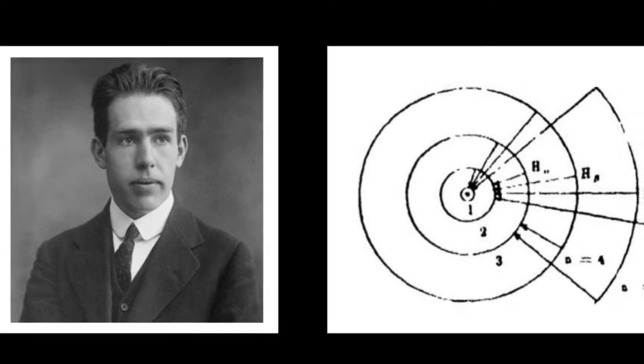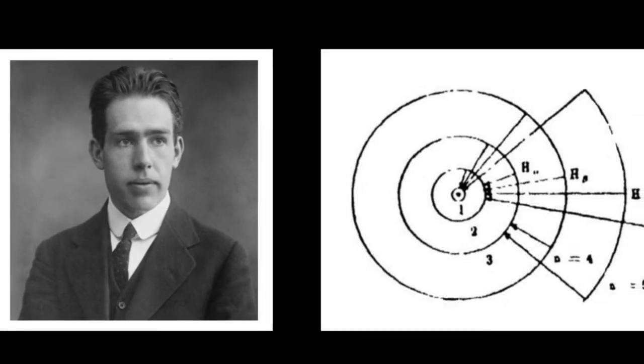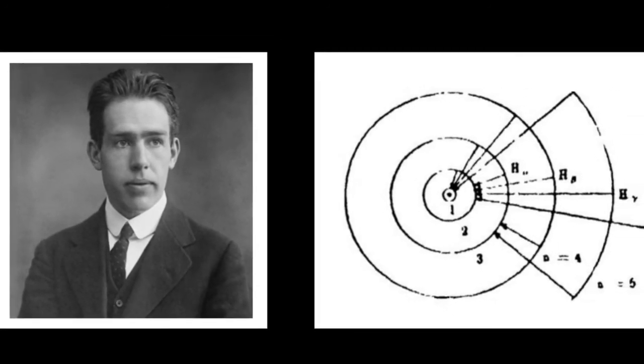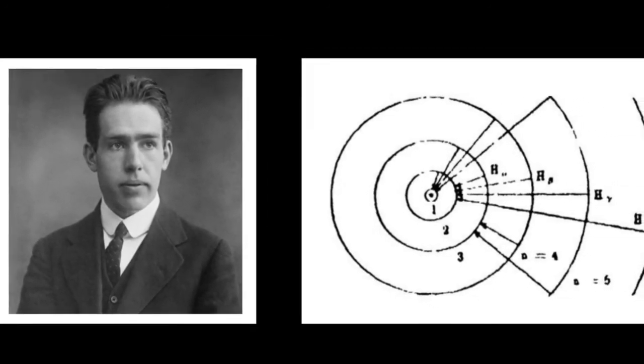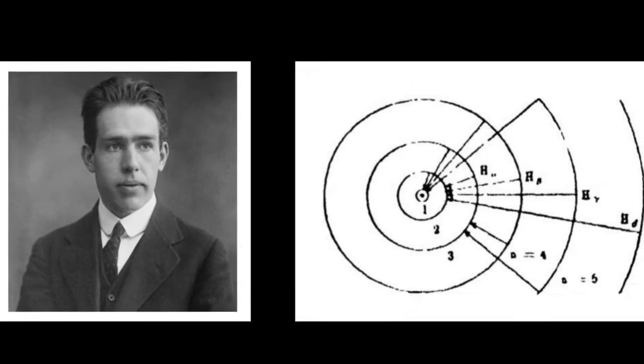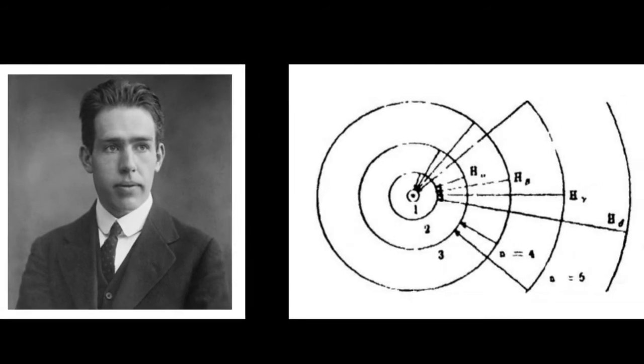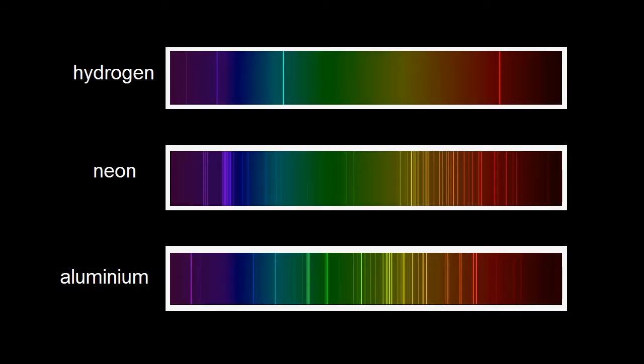Bohr's hypothesis was based on the observation of a very limited number of lines in the atomic spectra of hydrogen. It was Bohr's idea that the frequencies of the lines were related to the distance of the energy levels from the nucleus.